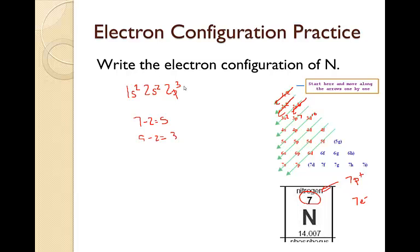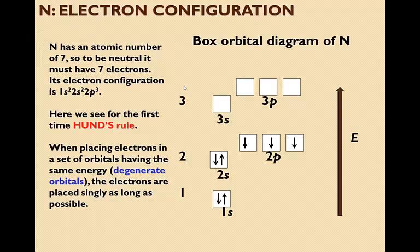So nitrogen has an atomic number of seven, so to be neutral, it has to have seven electrons. Therefore, as we determined on the previous slide, 1s², 2s², 2p³ is the electron configuration.